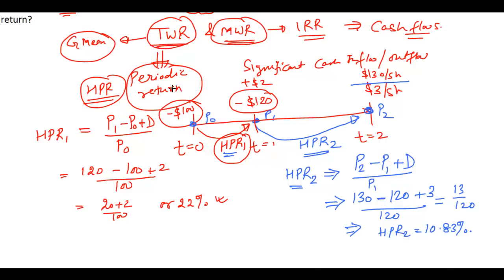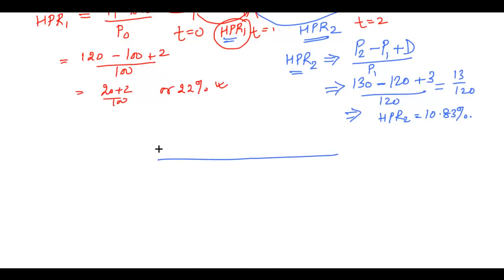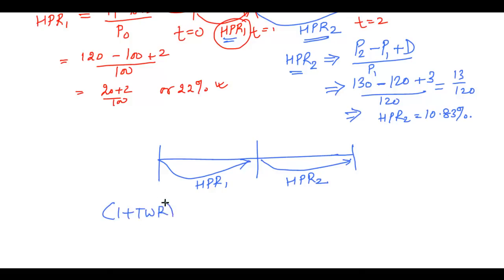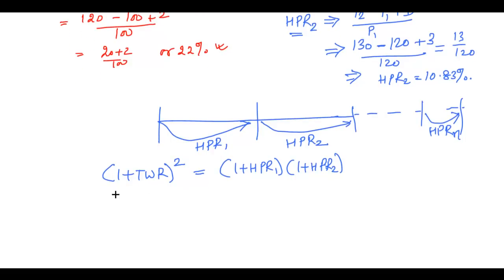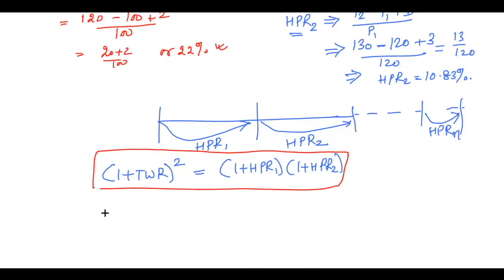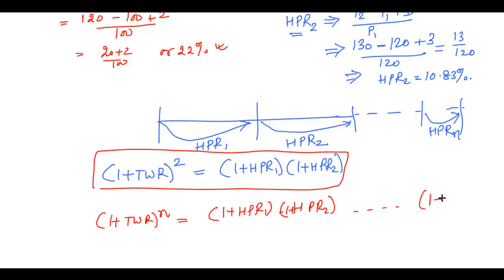To find out the time weighted return, the formula is similar to the geometric mean. For two periods: (1 + TWR)² = (1 + HPR1) × (1 + HPR2). For n periods: (1 + TWR)^n = (1 + HPR1) × (1 + HPR2) × ... × (1 + HPRn). This is the general time weighted return formula.